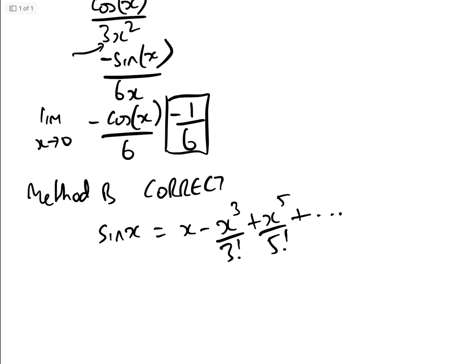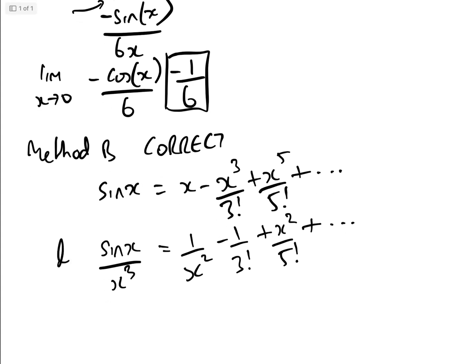And so therefore, sine x over x cubed is going to be 1 over x squared minus 1 over 3 factorial, plus x squared over 5 factorial. And the limit of that as x approaches 0, well, the limit of that as x approaches 0, that approaches infinity. That obviously is minus 1 sixth, which, by the way, is where that comes from.